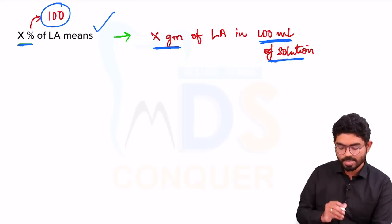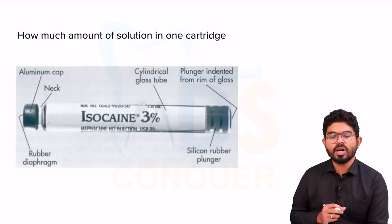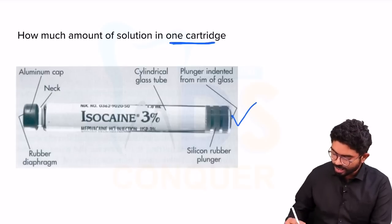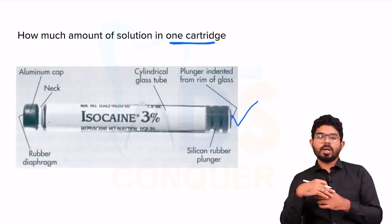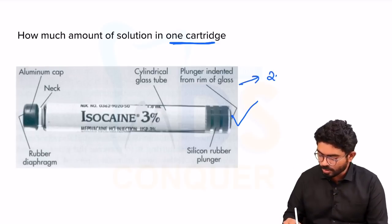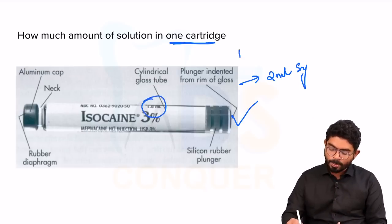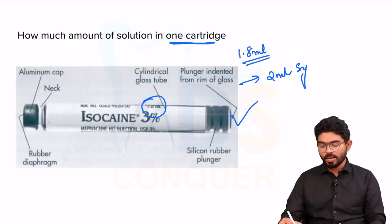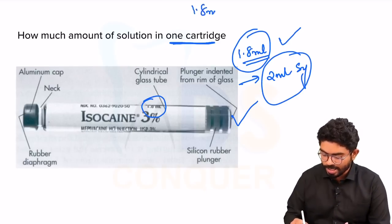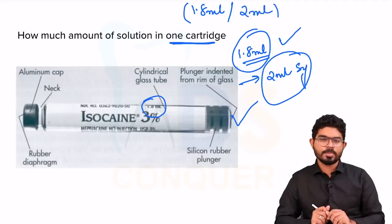Make a note: percentage means X grams of LA in 100 ml of solution. The second thing is how much solution is present in one cartridge. Whatever we regularly use in oral surgery departments — we use 2 ml syringes, but cartridges contain 1.8 ml in most situations. In Indian scenarios, they can ask about syringes, so it's going to be around 1.8 ml or 2 ml.